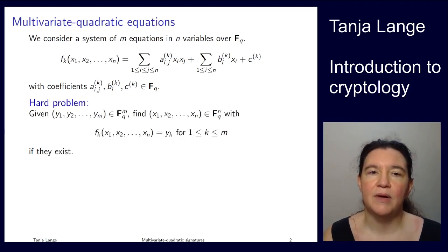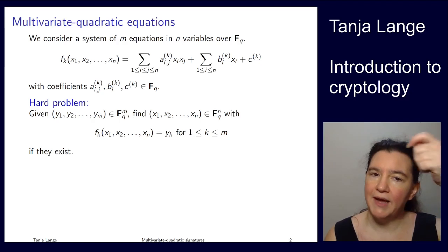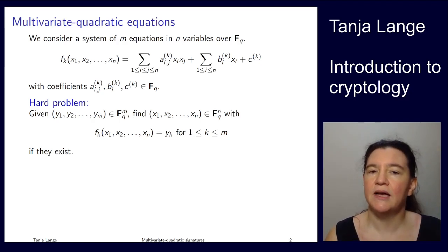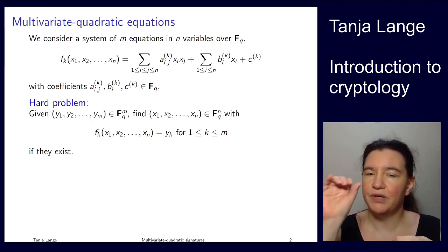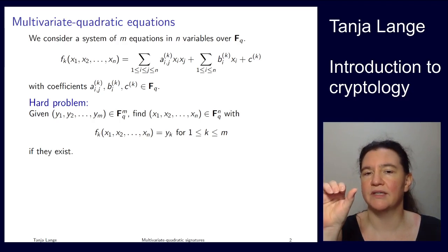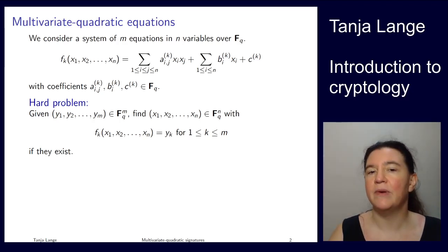The hard problem behind multivariate systems is that somebody gives you a right-hand side of the system and asks you to find a pre-image, so a vector x1 to xn, such that f1 till fm evaluate to y1 till ym.